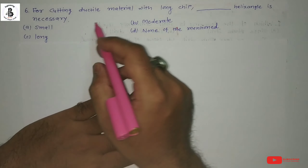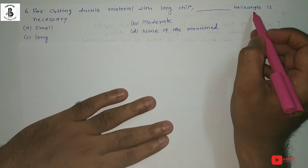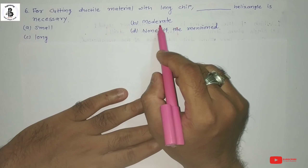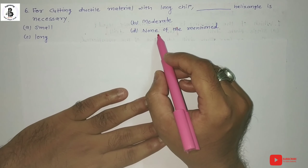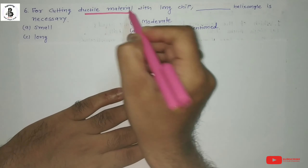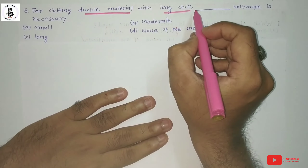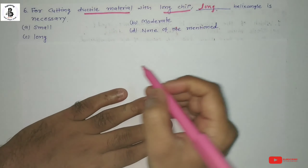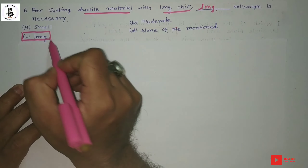Question six: For cutting ductile material with long chip, which helix angle is necessary? Option A small helix angle. Option B moderate helix angle. Option C long helix angle. Option D none of the above. For cutting ductile materials with long chips, a long helix angle is necessary. So the answer is option C, long helix angle.